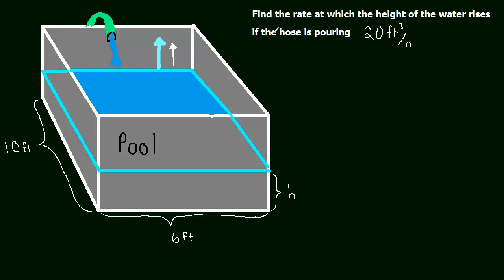Alright, so here we are going to find the rate at which the height of the water in this pool rises if this hose that's filling the pool is pouring 20 cubic feet of water per hour into the pool.